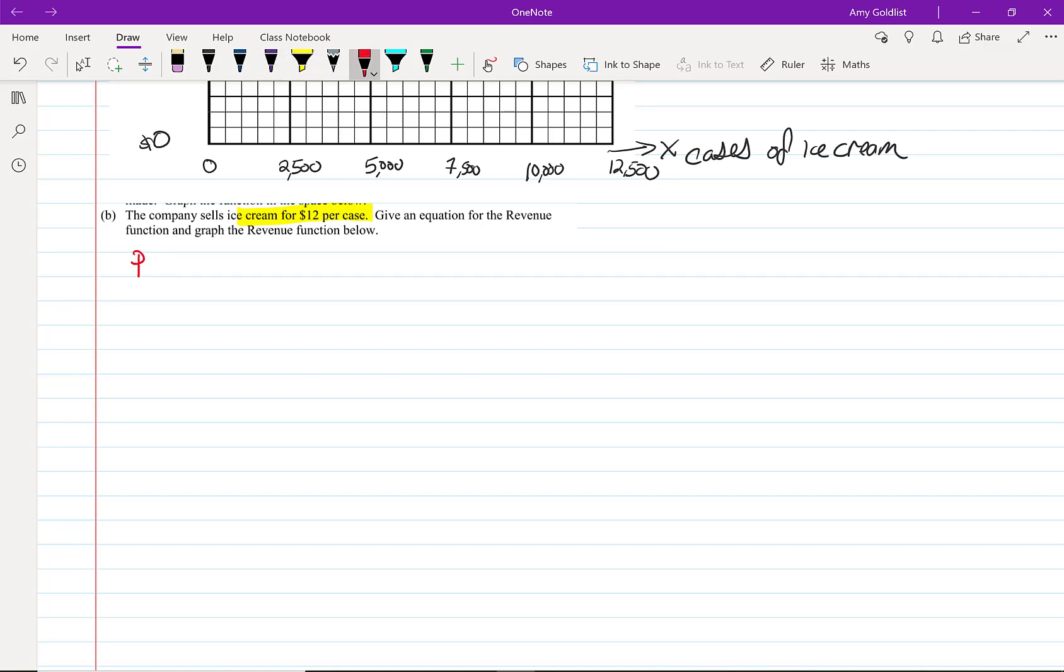Actually, I'm gonna switch this to purple. Why not? Price is $12 per case. Revenue is the same as sales, and that's always going to be defined as price times quantity. Sometimes quantity is done as Q for quantity. We often use X because that's what's used in algebra for unknowns.